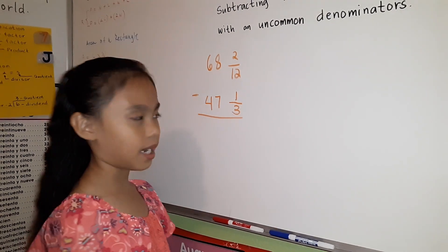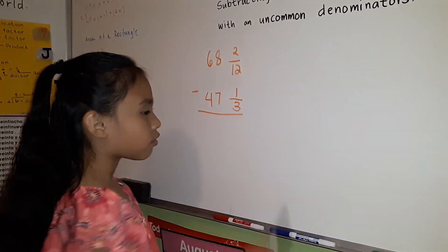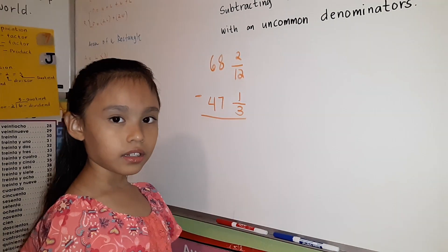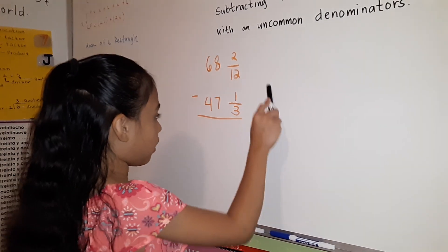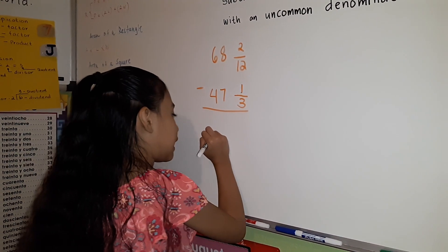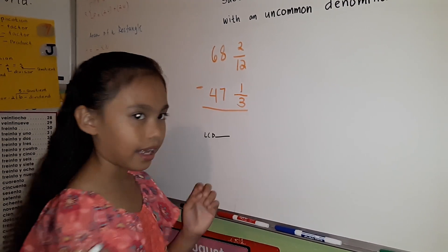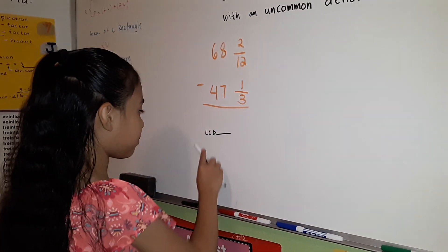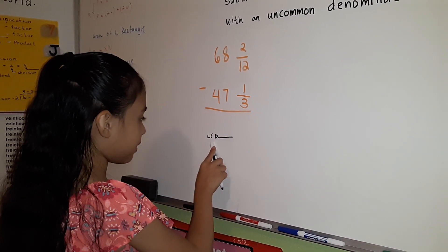First, we're going to look at the denominator of 12 and 3. 12 and 3 are uncommon. To find a common denominator of 12 and 3, we're going to use the LCD. LCD. You know what LCD means? L means for least, C is for common, D is for denominator.